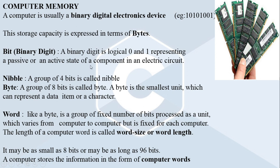If the component in that electric circuit is in an active state, it indicates the binary value 1. If it is in a passive state, it indicates logic 0. By making an electronic component passive or active, we can represent any sequence of binary numbers.